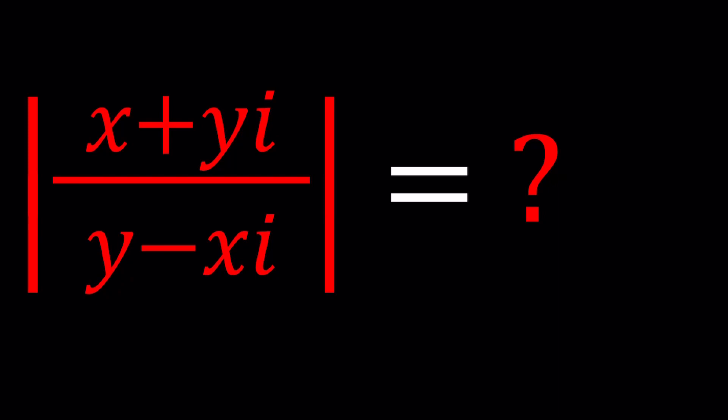Now we have the absolute value of the quotient of two complex numbers, x plus yi and y minus xi. In this case, x and y are not zero at the same time, obviously, because that would mean division by zero. But otherwise we are good, and we're going to simplify this expression.